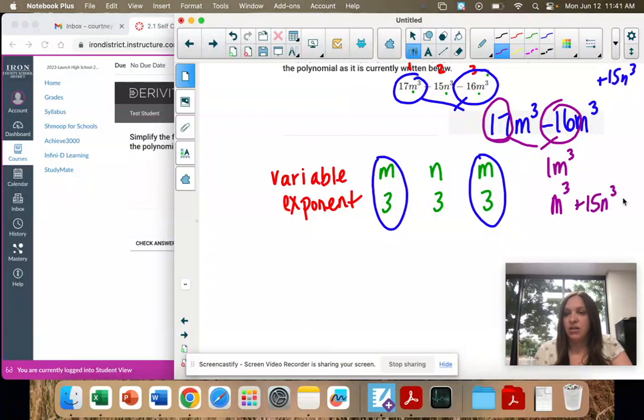Plus 15n to the third power because that didn't have anything to combine with. So it's just going to stay how it is.